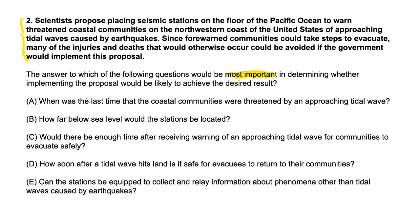A says: when was the last time that the coastal communities were threatened by an approaching tidal wave? If I answered that with, say, 1927, does that actually help evaluate the proposal? No. It doesn't matter when the last tidal wave was — all we know is that for the next one, we need to decide whether to implement this. So A is out.